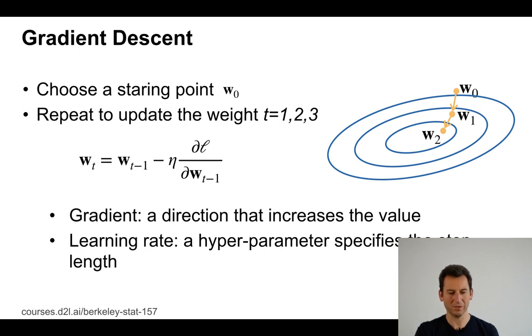This gradient of course is a direction that increases the value, so therefore moving in the negative gradient direction decreases things. The learning rate eta in this case is a hyperparameter that specifies the step length. In this picture the optimization problem is very nice and arguably we could have taken slightly more aggressive steps, but this gets us to a solution.